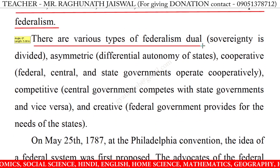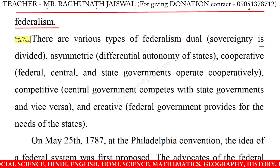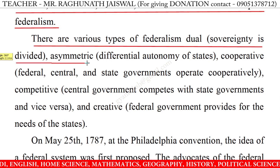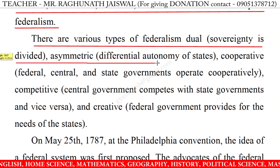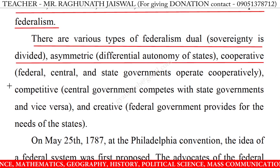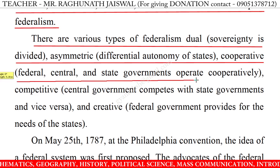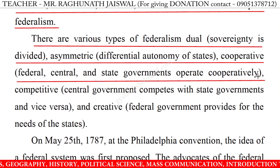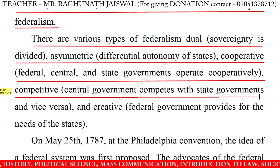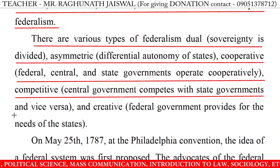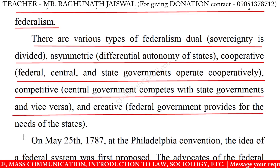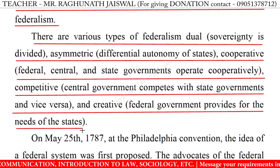There are various types of federalism. Dual — sovereignty is divided. Asymmetric — differential autonomy of state. Cooperative — federal, central and state governments operate cooperatively. Competitive — central government competes with state governments and vice versa. And creative — federal government provides for the needs of the state.